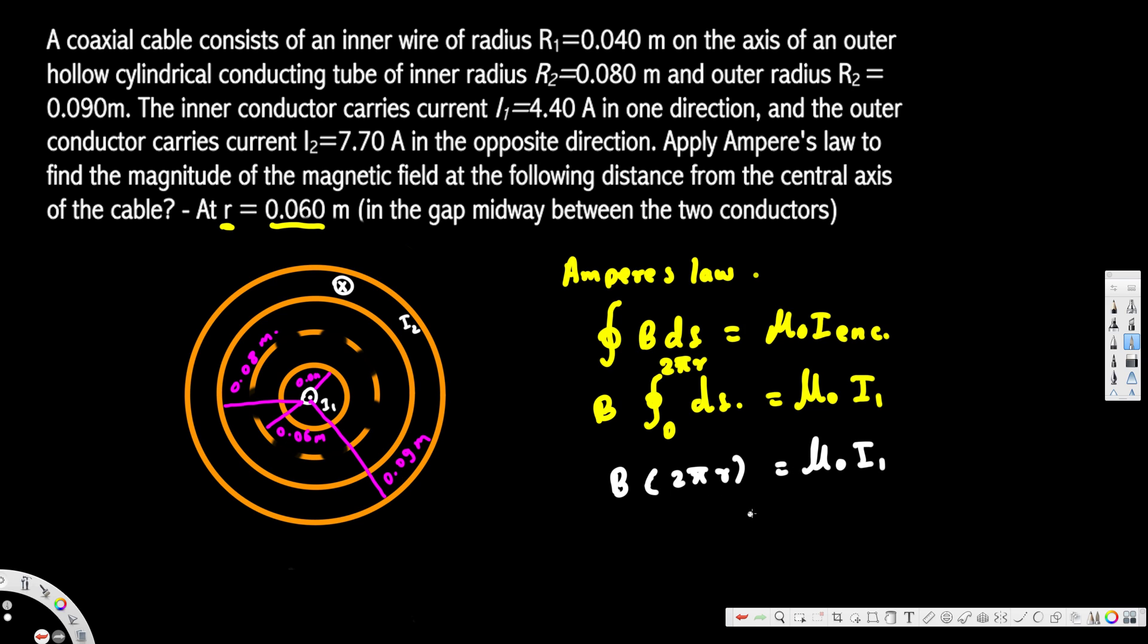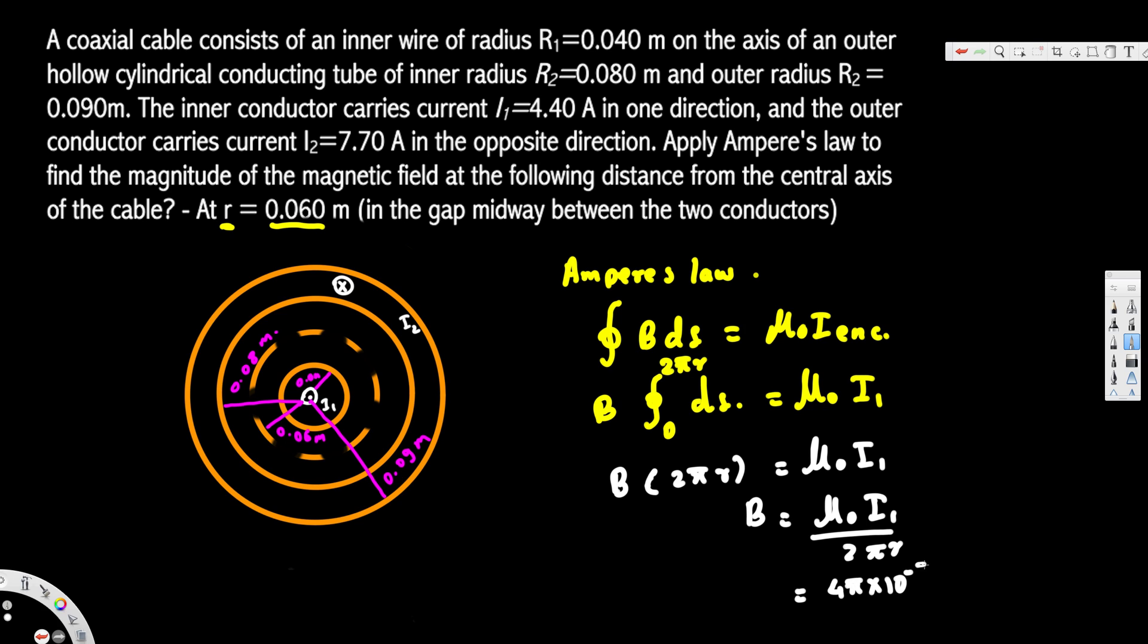μ₀ is 4π × 10⁻⁷, and I₁ is 4.4 A, divided by 2π times the r distance, which is 0.06 m.